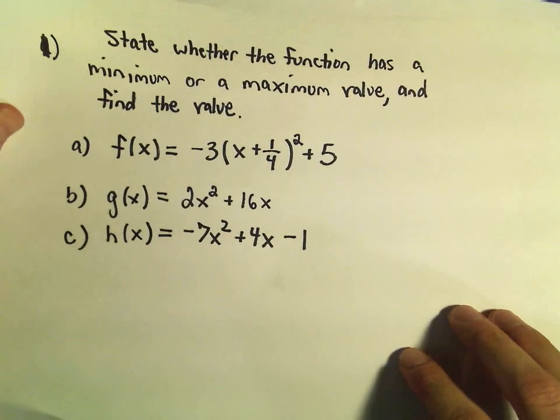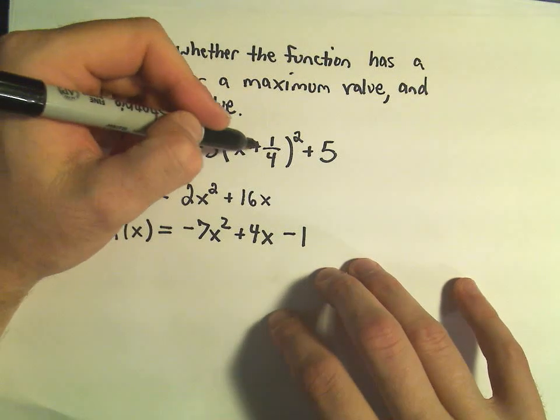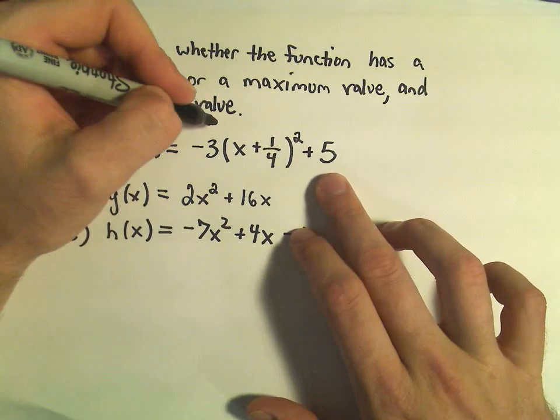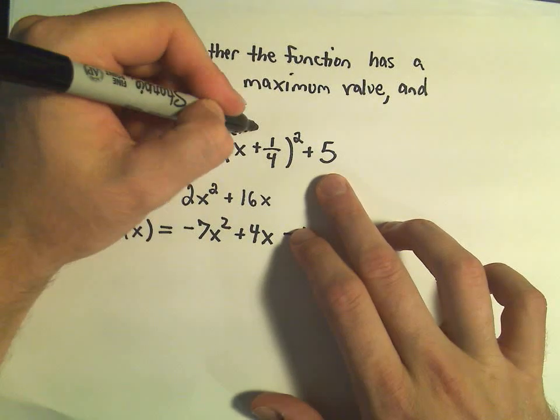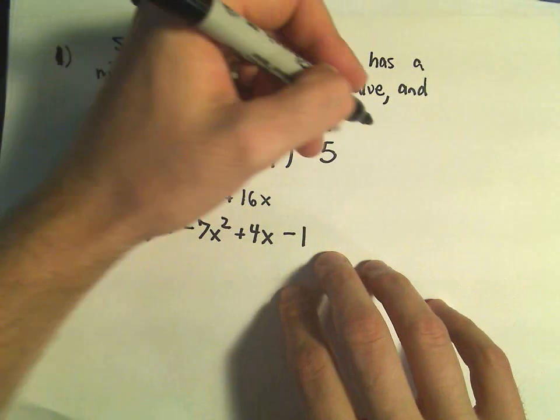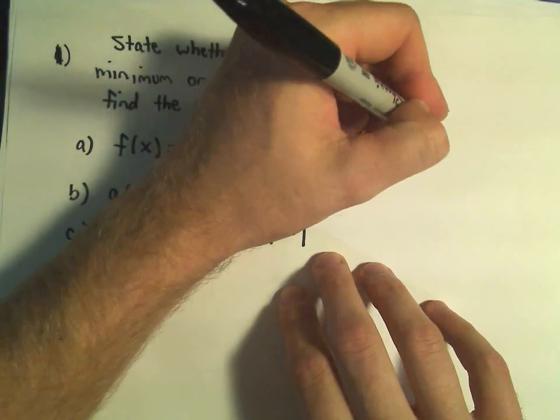So in the first case, we've got negative 3 times the quantity x plus 1 fourth squared plus 5. Notice this is in our vertex form, a times x minus h squared plus k. Since our a is negative, I already know it's opening downwards, which means I have to have a maximum value,